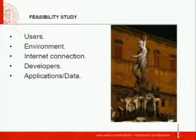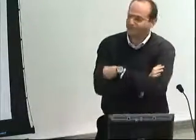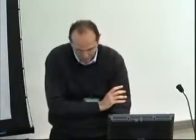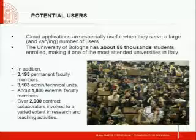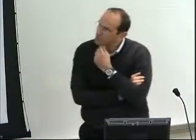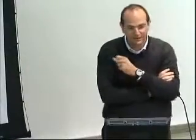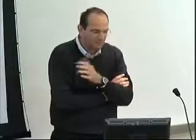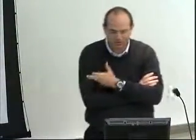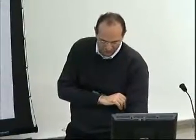Regarding users, there are about 85,000 students, plus 3,000 faculty members, 3,000 technical staff, and another 3,000 or so external faculty and contract collaborators including postdocs. Regarding the environment: Bologna University is a multi-campus institution made up of five campuses — Bologna, Forlì (50 km south), Rimini (another 50 km south), Ravenna, Cesena — plus a unit in Buenos Aires. These five campuses host 23 faculties and 70 departments.